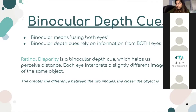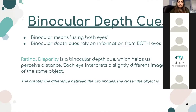One specific type of binocular depth cue is called retinal disparity, and this helps us perceive distance. Each eye interprets a slightly different image of the same object, and the greater the difference between those two images, the closer the object is. So if you close your right eye, then open it and close your left eye — especially if you do that quickly — you're going to see two different images, even though you're perceiving one certain environment. Pretty cool.